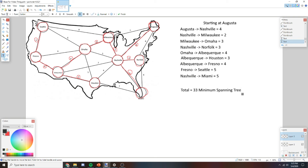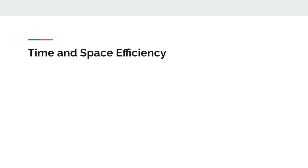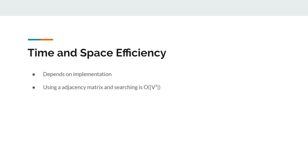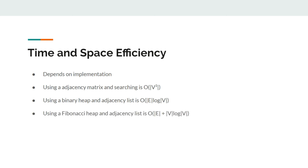Now I'm going to talk about the time and space efficiency. It really depends on the implementation since there are plenty of ways to implement Prim's algorithm. Using an adjacency matrix and linear search is O(V²). Using a binary heap and adjacency list is O(|E| log |V|). Using a Fibonacci heap and adjacency list is O(|E| + |V| log |V|).